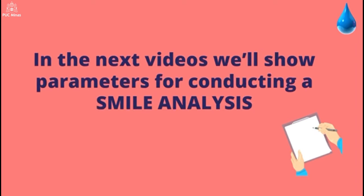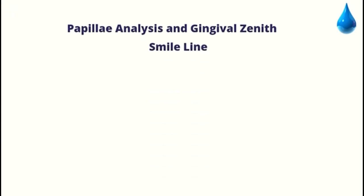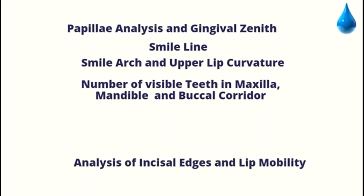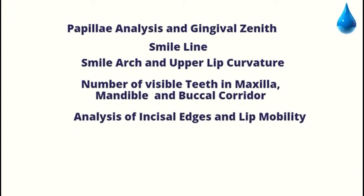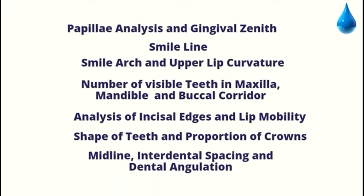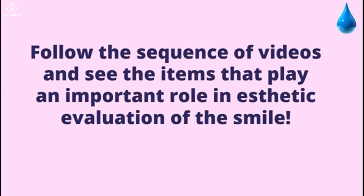In the next videos, we'll show parameters for carrying out a smile analysis, not only focused on implant dentistry, but on the patient's aesthetic oral rehabilitation, as a way to assist in diagnosis and decision making. The items evaluated will be: papillary analysis and gingival zenith, smile line, smile arch and upper lip curvature, number of visible teeth in maxilla, mandible and buccal corridor, analysis of incisal edges and lip mobility, shape of teeth and proportion of crowns, midline, interdental spacing, and dental angulation. Follow the sequence of videos and see the items that play an important role in aesthetic evaluation of the smile.